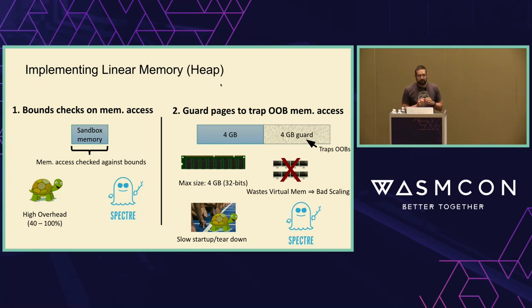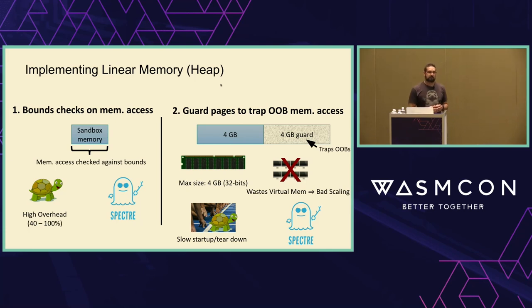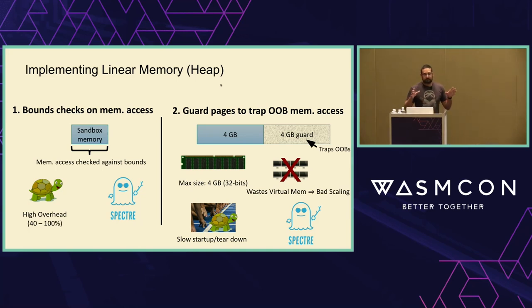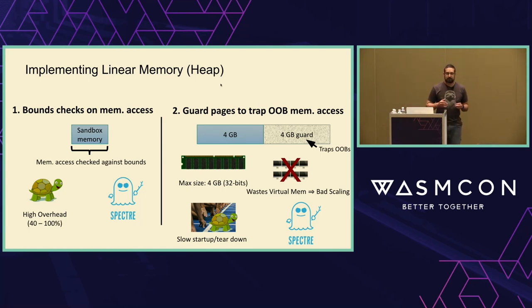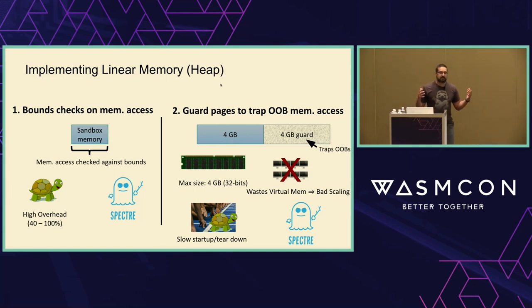One way to think about WebAssembly is as a kind of poor man's segmentation. We're taking hardware that no longer does segmentation for us and using the compiler to give us a segmented memory model instead. The advantage of segmented memory in software is that it lets us avoid the overheads of hardware — TLB flushes, TLB shootdowns, context switch overheads — all the things that happen with traditional hardware protection.